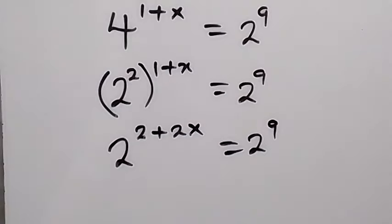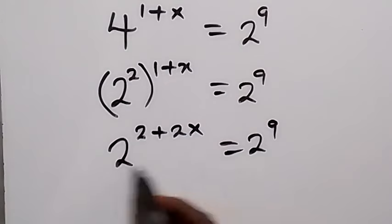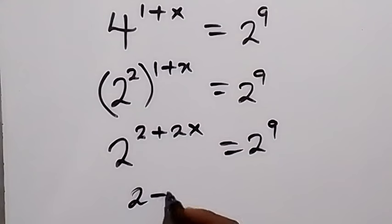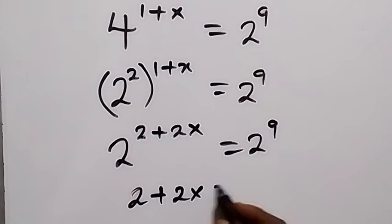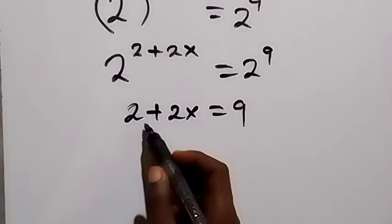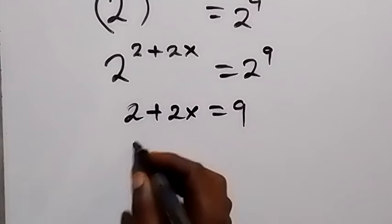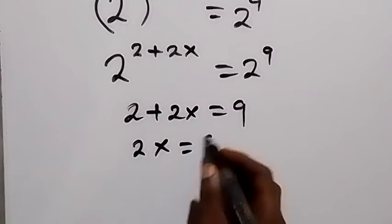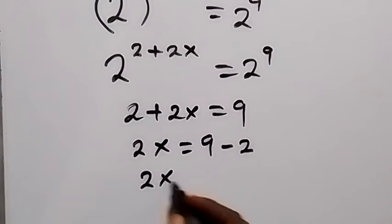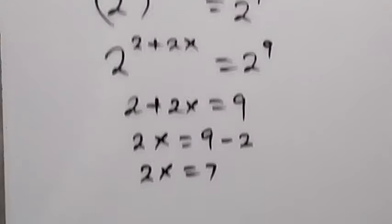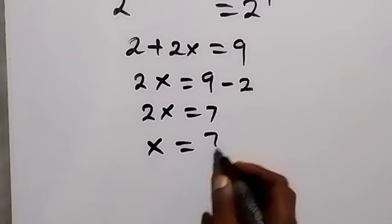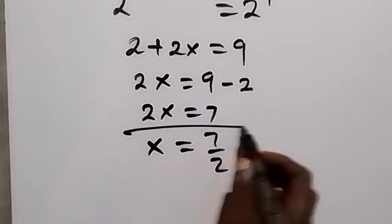And here, on both sides we have the same base, so we can equate the powers. This gives us 2 plus 2x equals 9. Taking 2 to the other side, we have 2x equals 9 minus 2, so 2x equals 7. Then x equals 7 over 2, dividing both sides by 2.